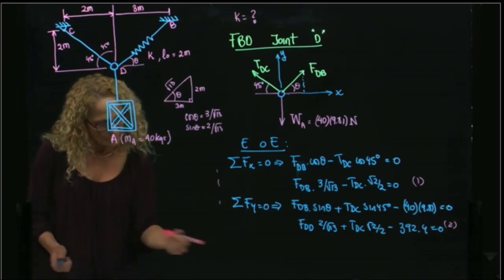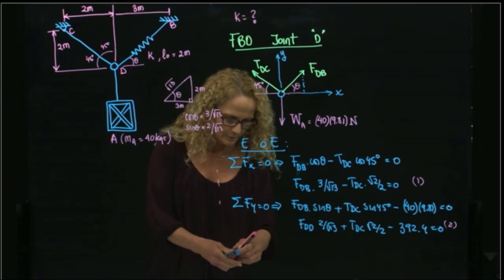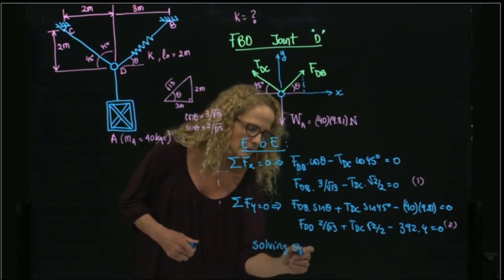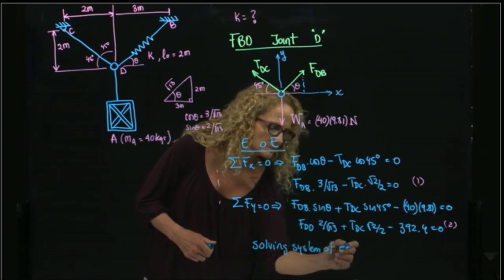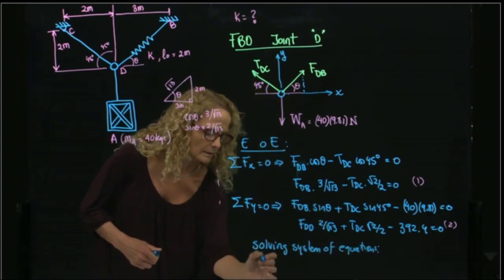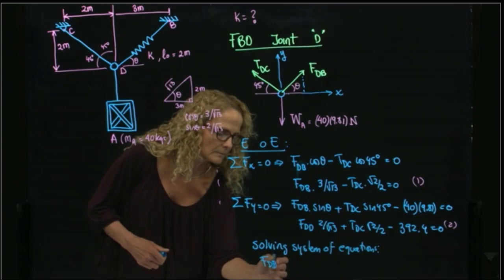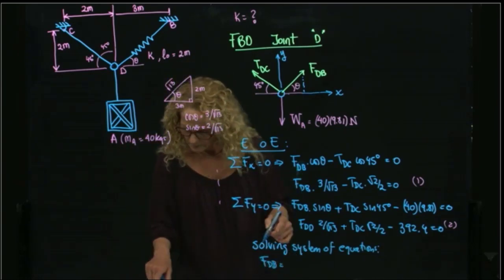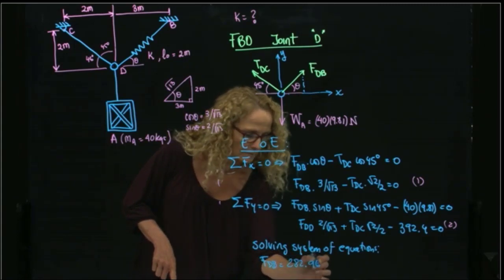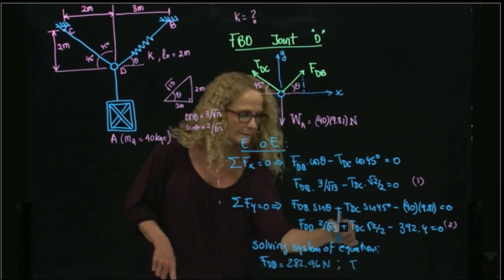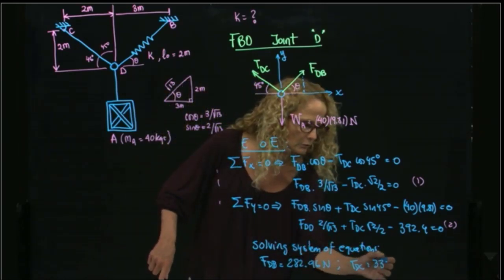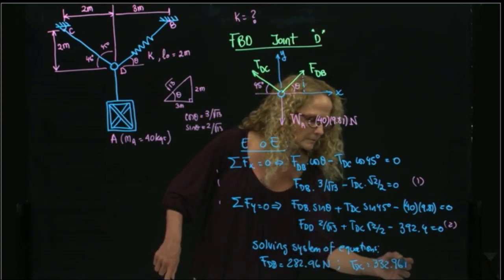Solving the system of equations, I get the two values. Let me do it over here. Solving system of equations, I get that the force of the spring is equals to 282.96, and the force, the tension on the cord, is equals to 332.96 newtons.